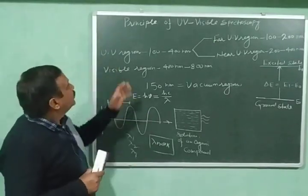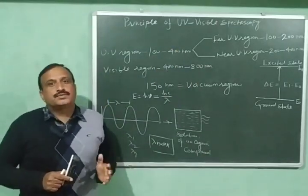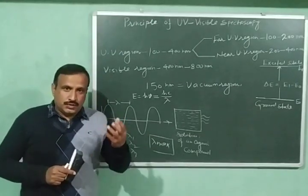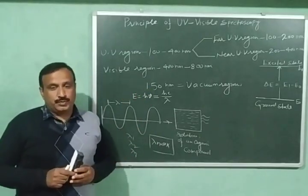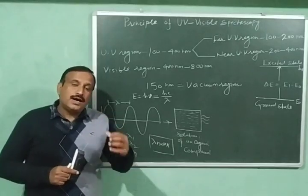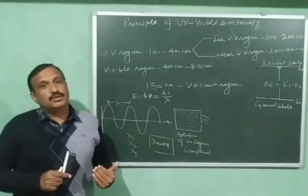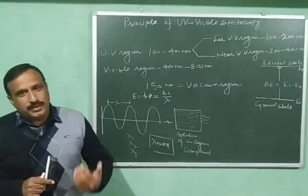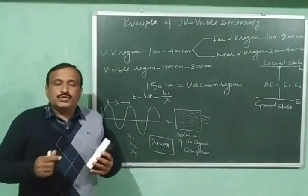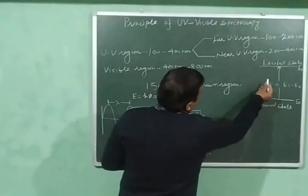Now let us discuss the principle of UV-visible spectroscopy. When an ultraviolet or visible radiation is passed through the solution of an organic compound, that radiation is either absorbed or transmitted depending upon the wavelength of the radiation and the molecular structure of the compound. Due to the absorption of energy, electrons are excited from the ground state to the excited state.